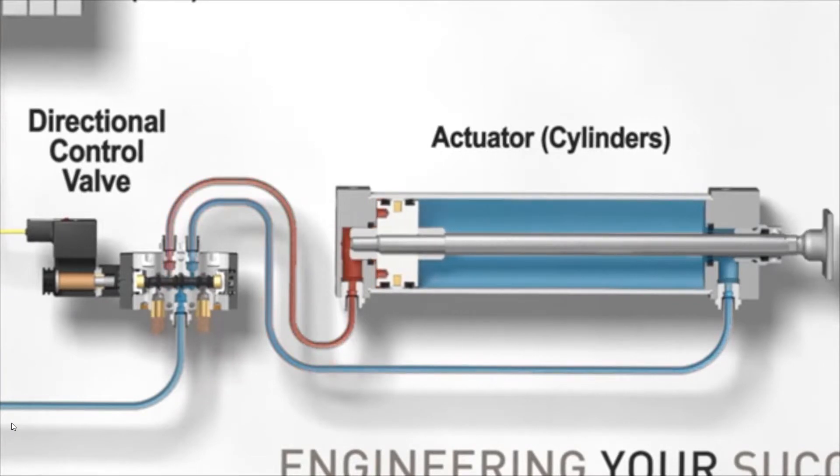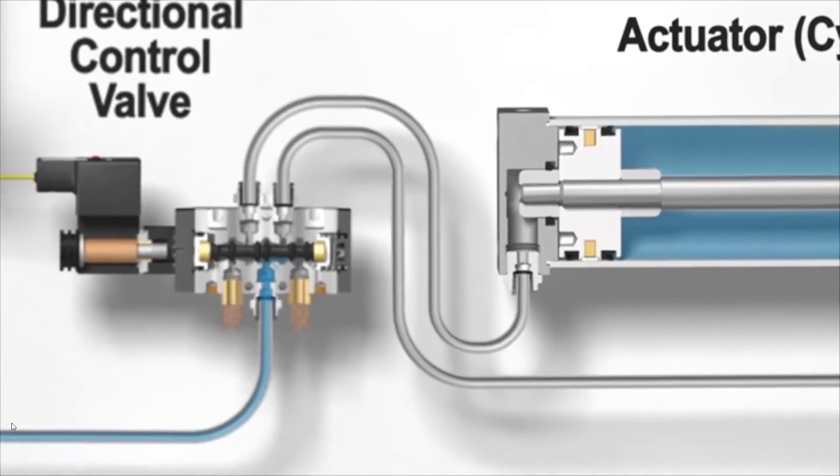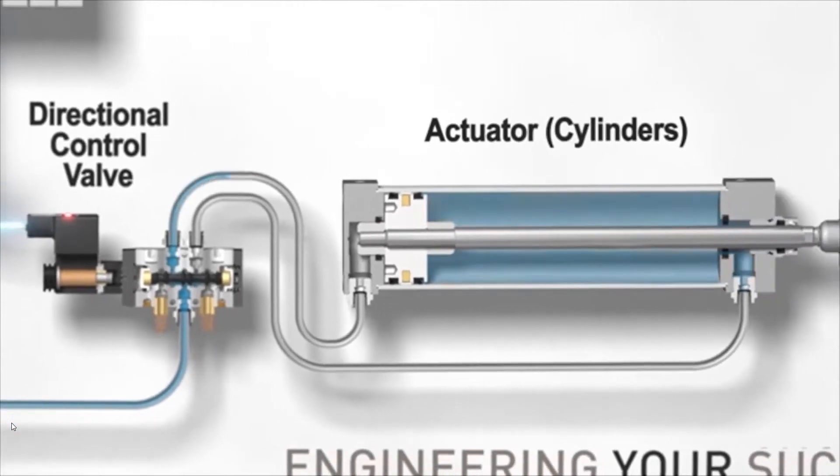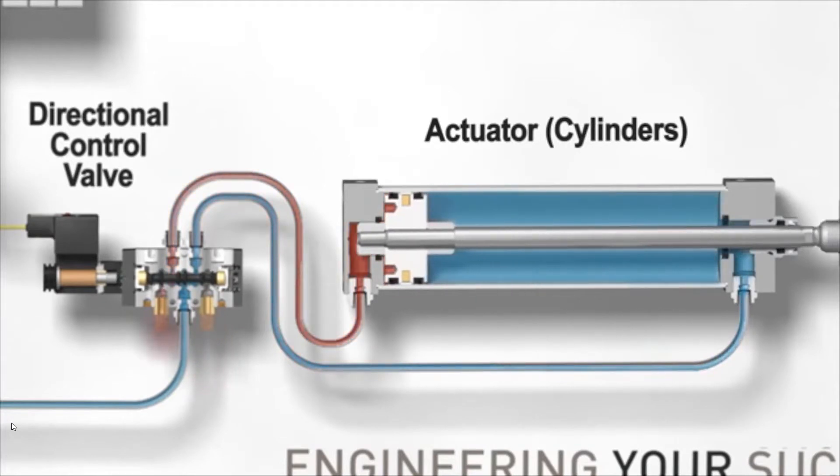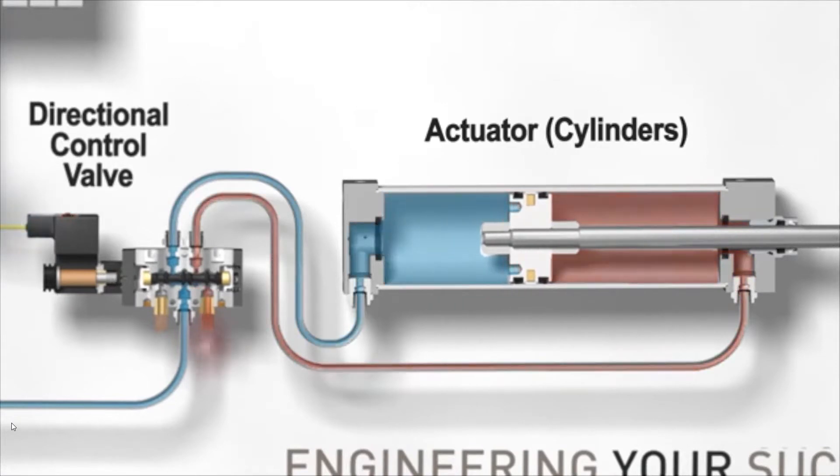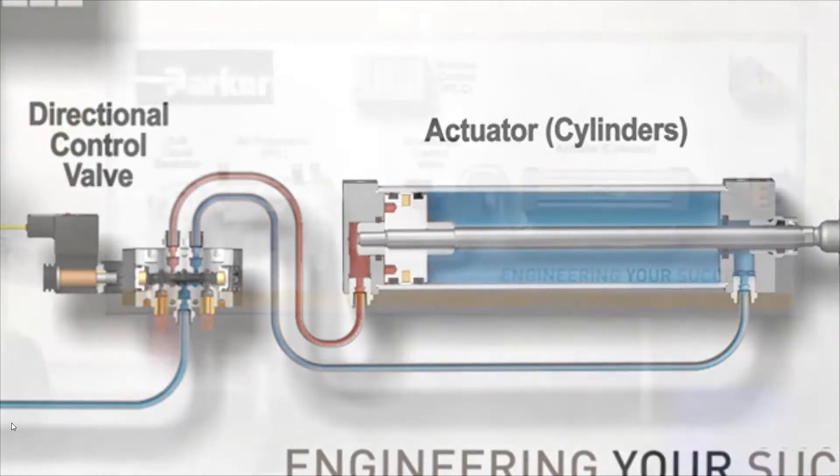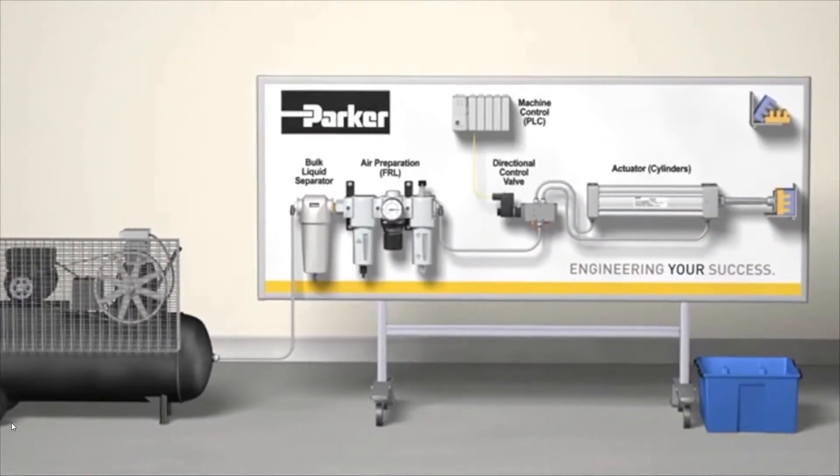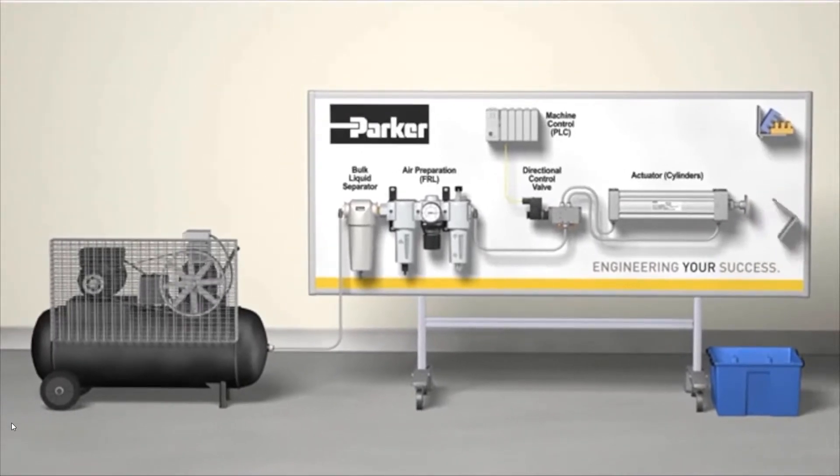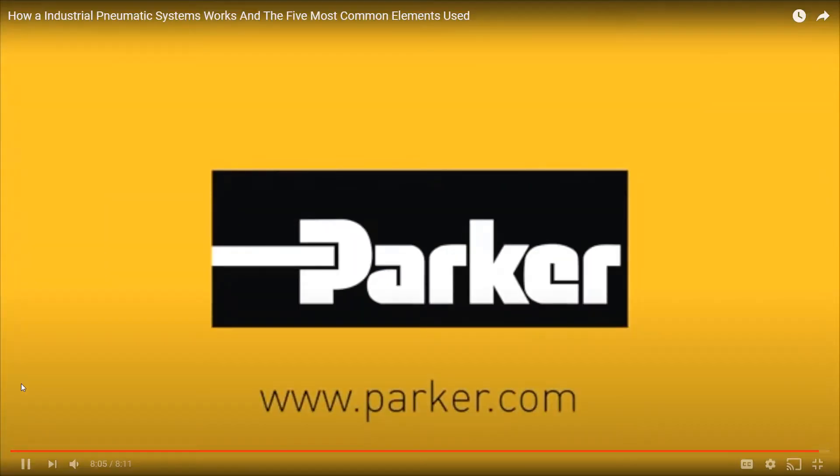In this example, the PLC is telling the actuator to move this product by sending a signal to the directional control valve, which is using the clean, dry, compressed energy to power the actuator. Pneumatics are also commonly used to press two components together in an assembly process to help form a finished good. Through the combination of Parker's air preparation, valve and actuator products, there is a wide range of applications that can be solved. Visit us at Parker.com to explore all of the pneumatic products we have to offer.